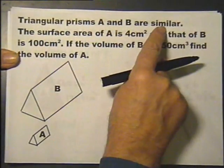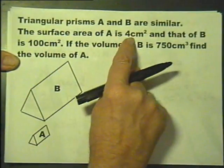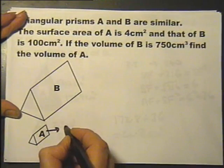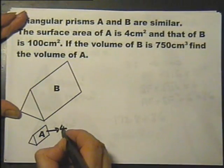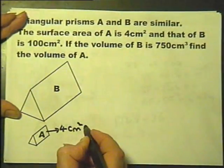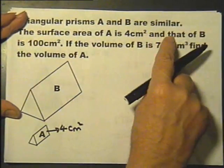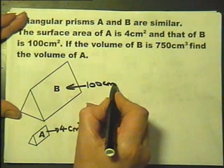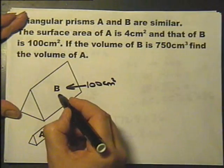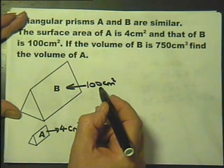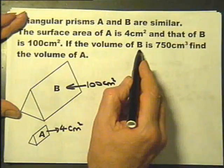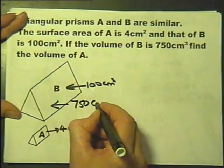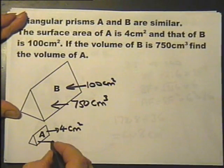Triangular prisms A and B are similar. The surface area of A is 4 square centimeters. So the total area of the 5 faces added together is 4 square centimeters. The surface area of B is 100 square centimeters. So the area of the 3 rectangles and 2 triangles for 5 faces is that. The volume of B is 750, so the volume of this is 750 cubic centimeters. Find the volume of this.